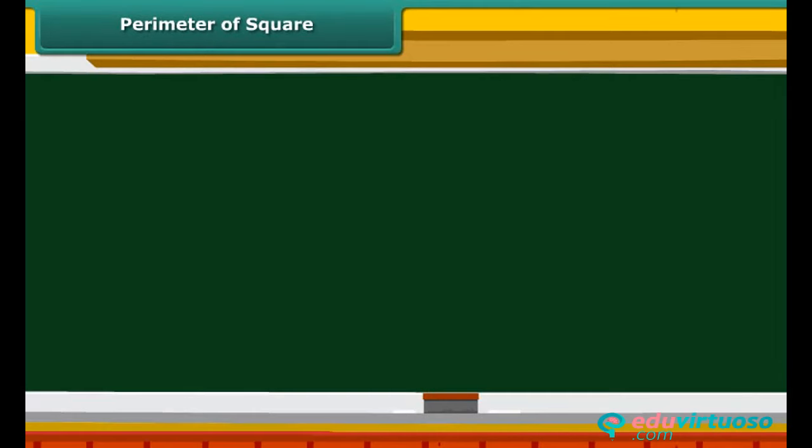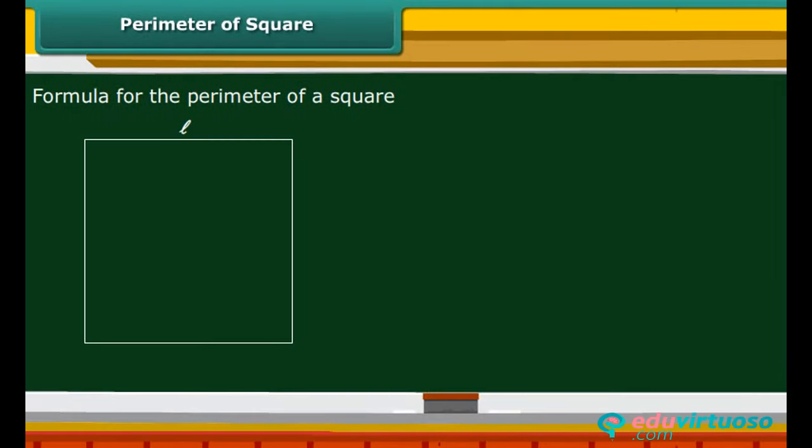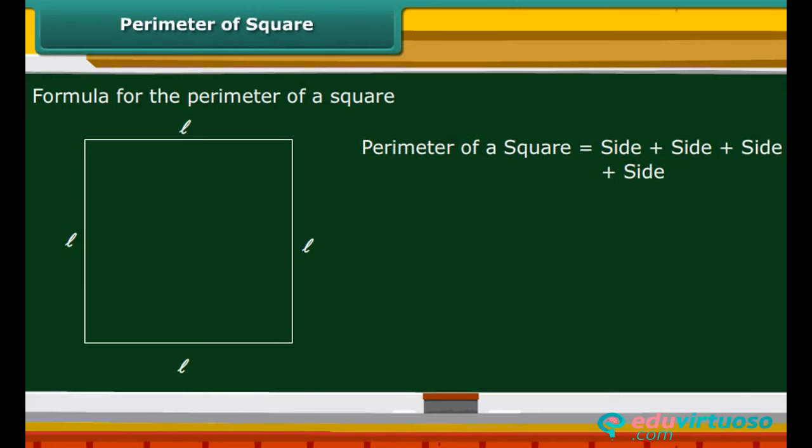Now, let us work out the formula for the perimeter of a square. You are already aware that all four sides of a square are equal in length. Therefore, the perimeter of a square is 4 multiplied by its side.